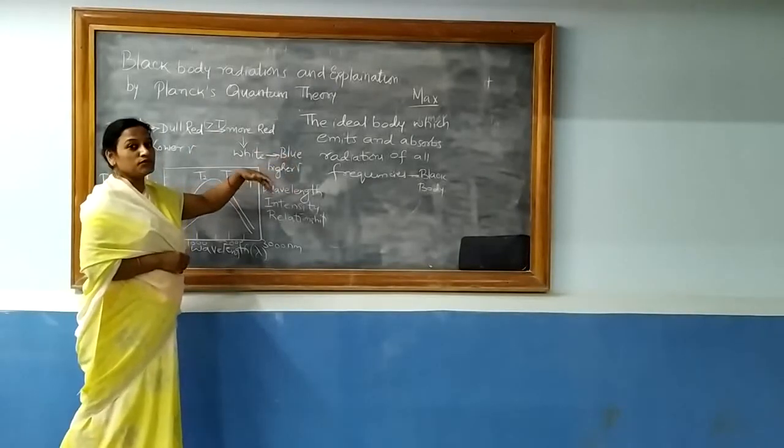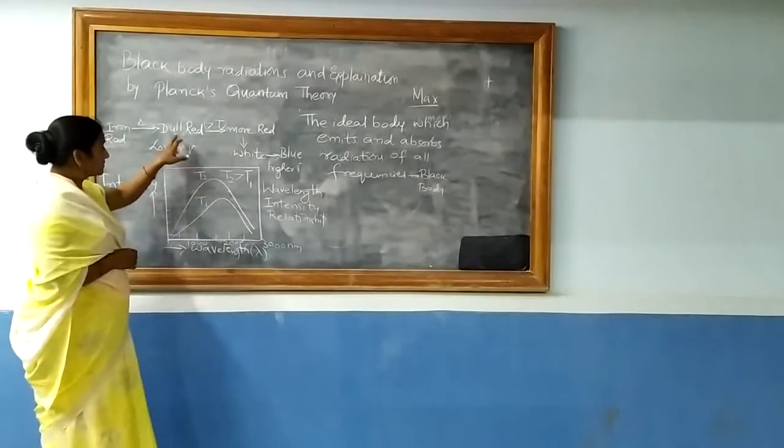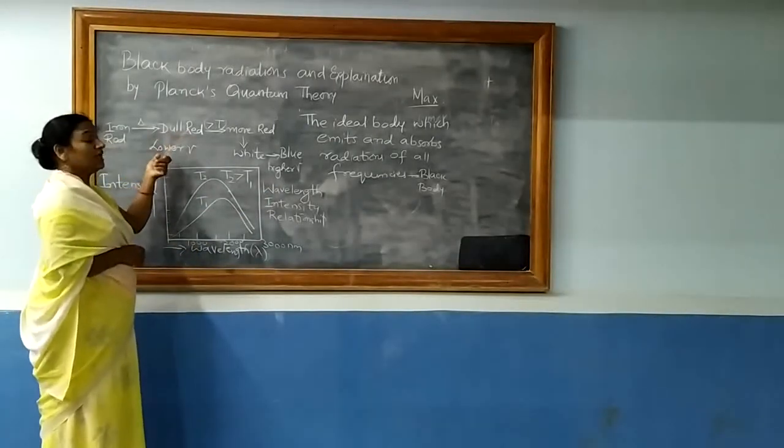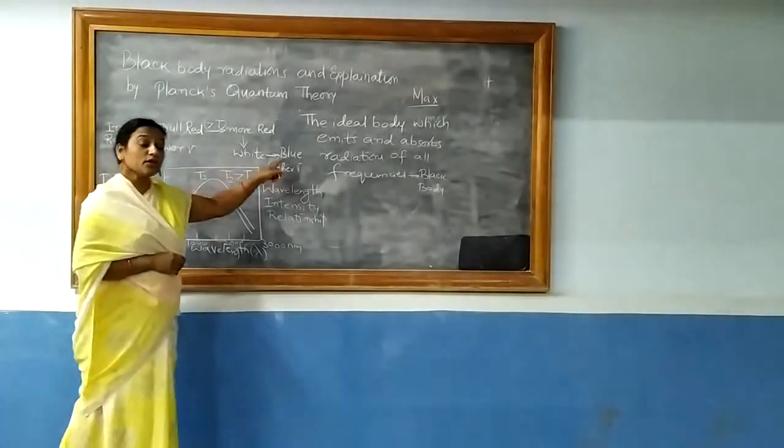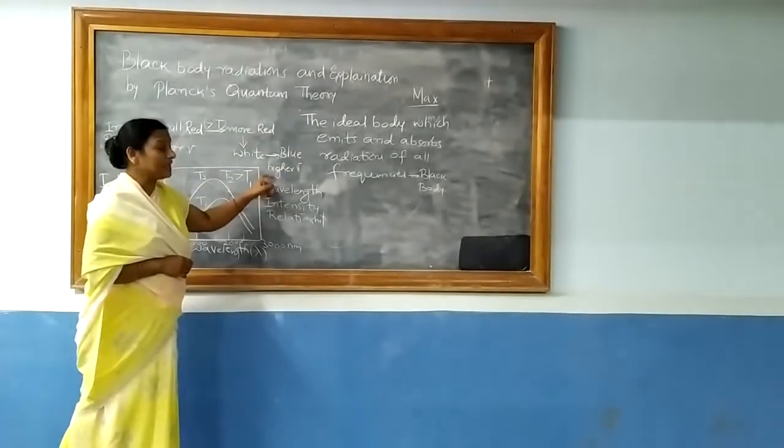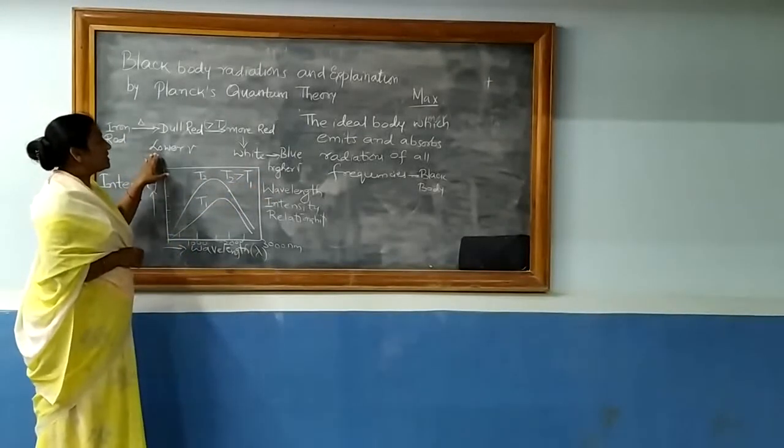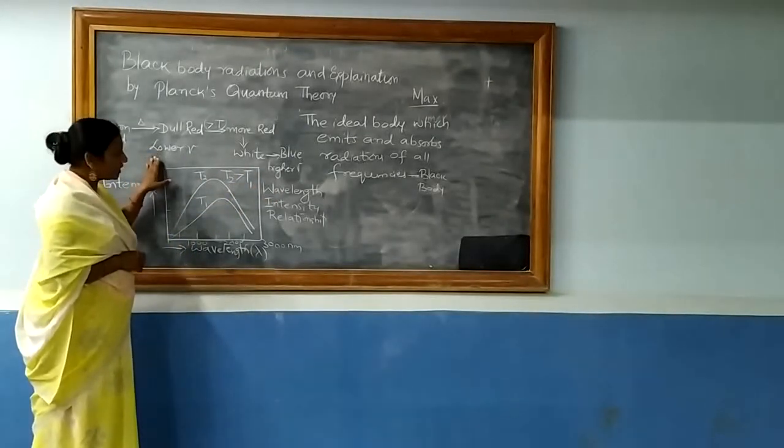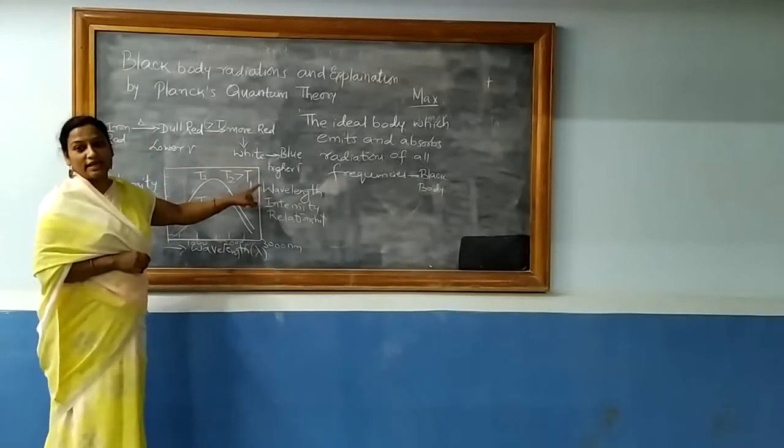If you explain this in terms of frequency, red color comes in the lower frequency region whereas blue color comes in the higher frequency region. That is, frequency ranges from lower frequency to higher frequency as the temperature increases.